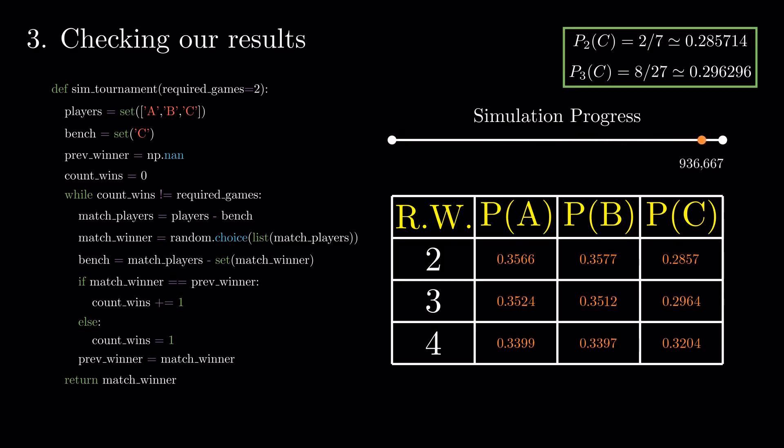We can see that the answers we got before match the simulated chances. One other thing that you can remark is that, while the tournament is unfair to C, increasing the number of games necessary to win makes the odds more balanced between the three players.